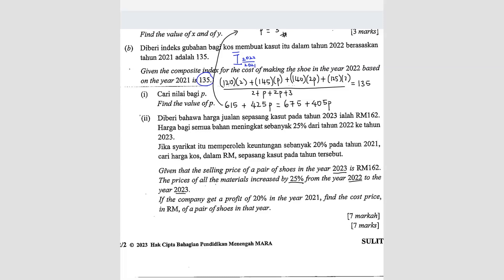So what does this mean? That means the composite index of the price from 2022 to 2023 equals 125, because it's a 25% increase. If the company gets a profit of 20%, we need to find the cost price. But first, when they ask this kind of question, you should know that you have to combine a few composite indices. So remember this smiley method.